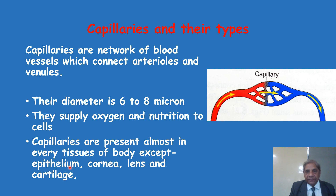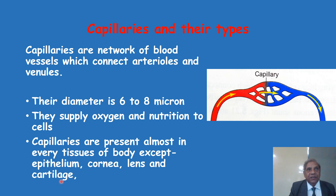Places where capillaries are absent include: number one, the epithelium, which is the surface lining of cells. Similarly, the cornea of the eyeball does not have capillaries — otherwise it would interfere with the passage of light rays. Similarly, the lens of the eyeball and the cartilages present in various parts of our skeletal system — whether hyaline, elastic, or fibrocartilage — do not have blood vessels. The chondrocytes and the ground substance of cartilage obtain oxygen and nutrition by the method of diffusion.